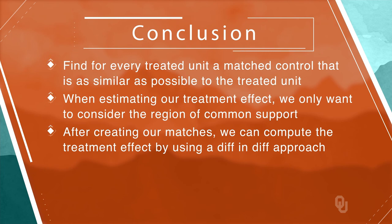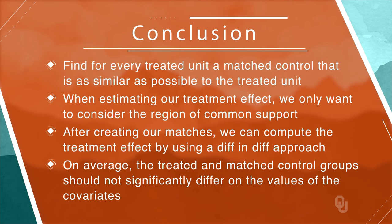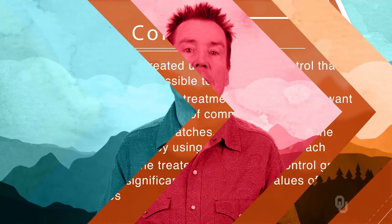One important reality check on the model is covariate balance — that is, on average, the treated and matched control groups should not significantly differ on the values of the covariates used in the first-stage model. Matching, especially when combined with diff-and-diff, is a very useful technique to remove selection bias when estimating treatment effects in observational data. Personally, I think it is way underrated.